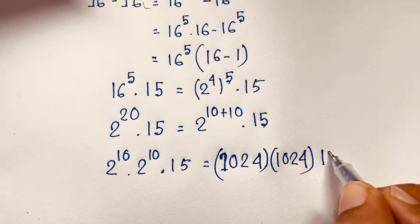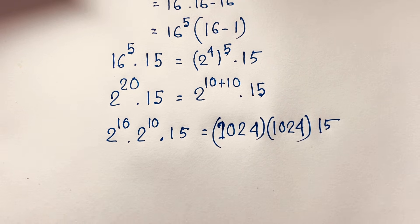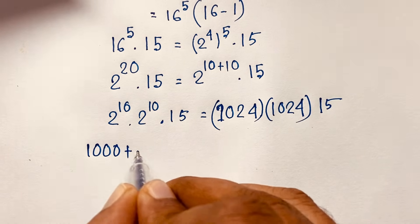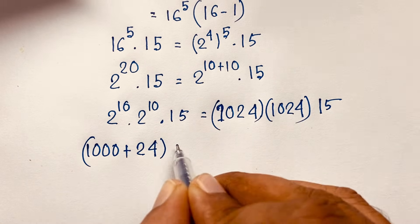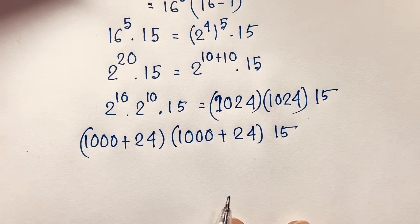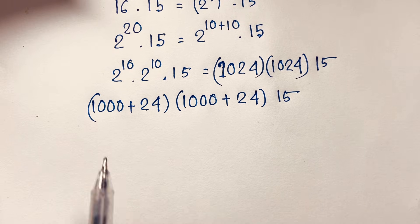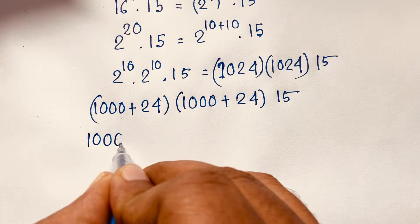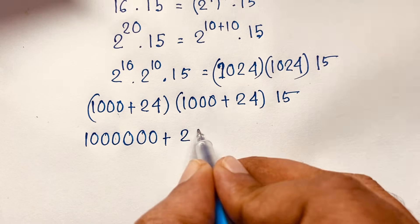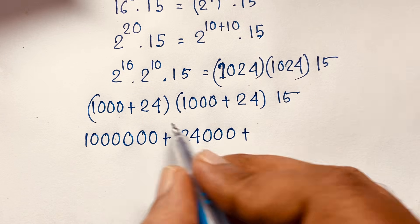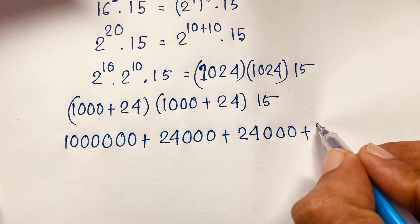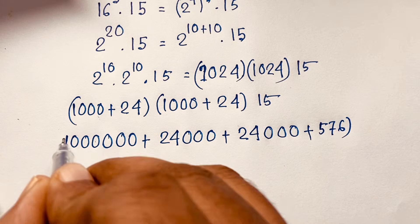So the full expression is 1024 times 1024 times 15. We can write 1024 as 1000 plus 24. Expanding: 1000 times 1000 is 1,000,000; 1000 times 24 is 24,000; 24 times 1000 is another 24,000; and 24 times 24 is 576. Adding these gives 1,048,576.